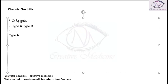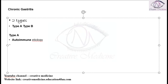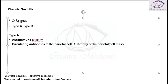Type A chronic gastritis is actually an autoimmune etiology, where autoantibodies are present against the parietal cells. These autoantibodies against the parietal cells will destroy the parietal cells, leading to atrophy of the parietal cell mass.